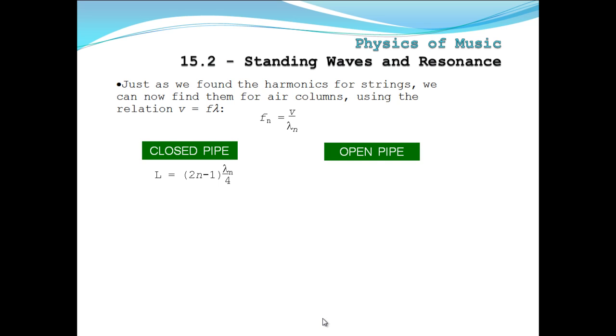So for a closed pipe, we have this equation. And for an open pipe, we have this. We solve this for lambda. We get lambda sub n equals 4l divided by 2n minus 1. And for the open pipe, we just get lambda n equals 2l over n.